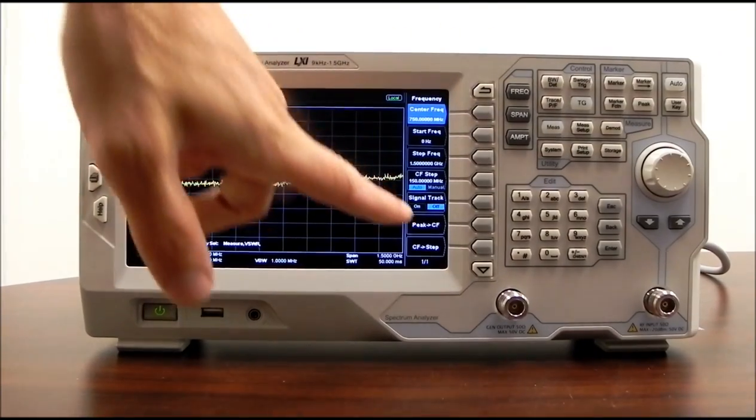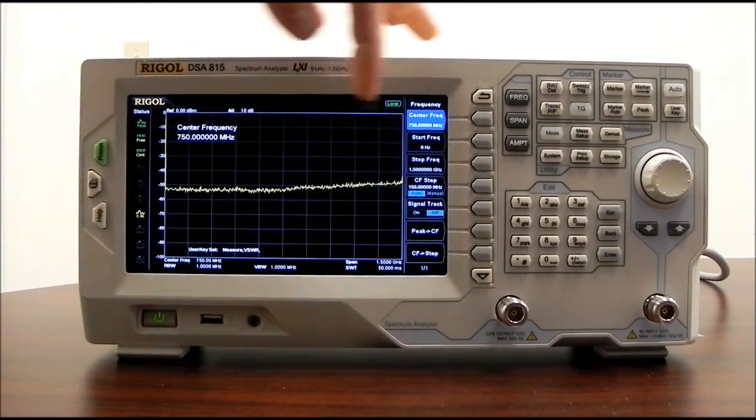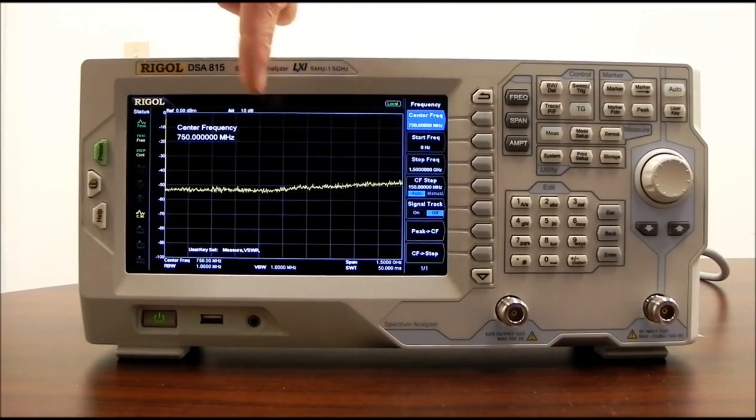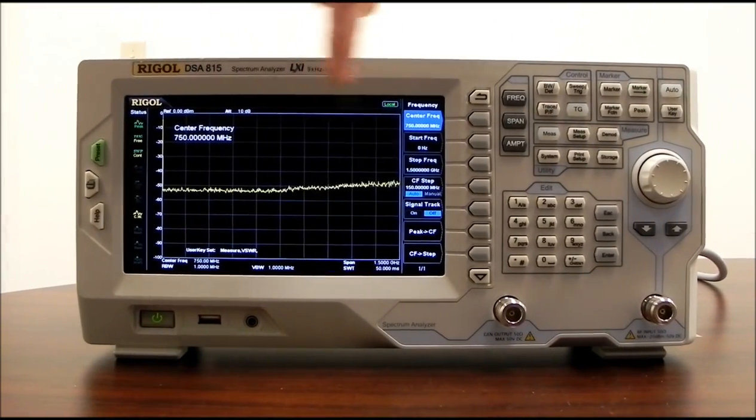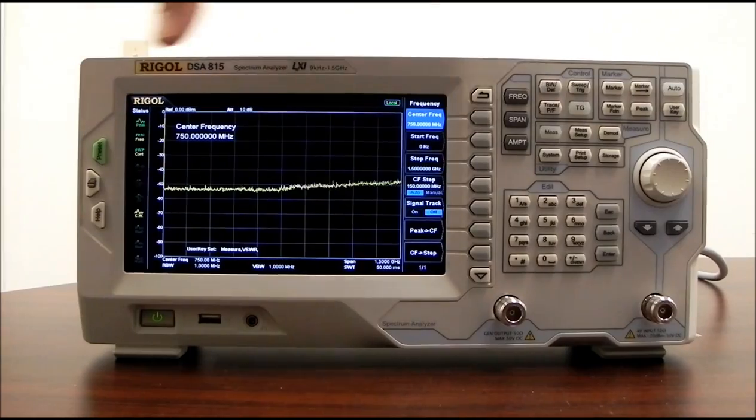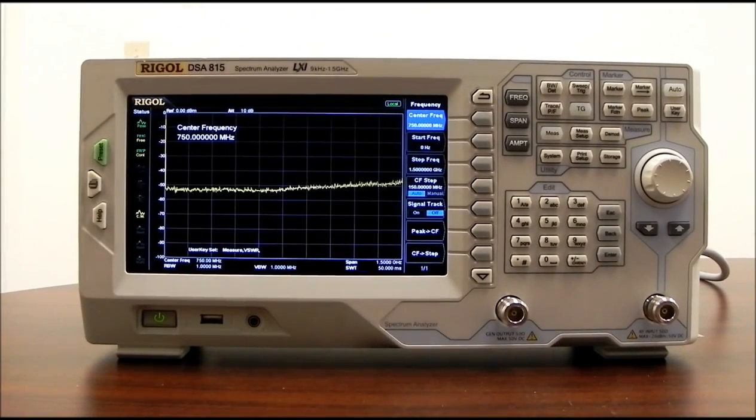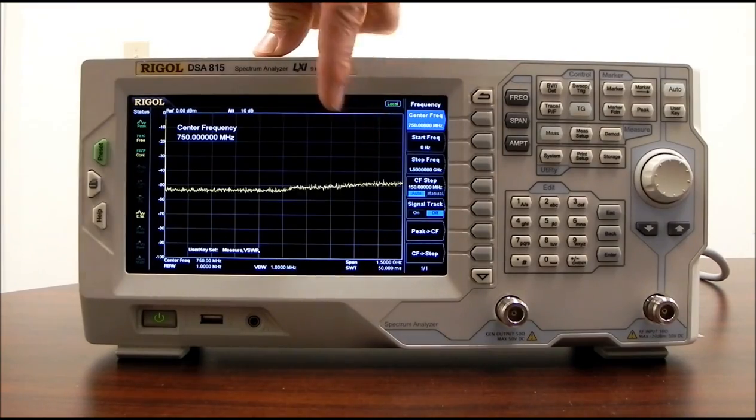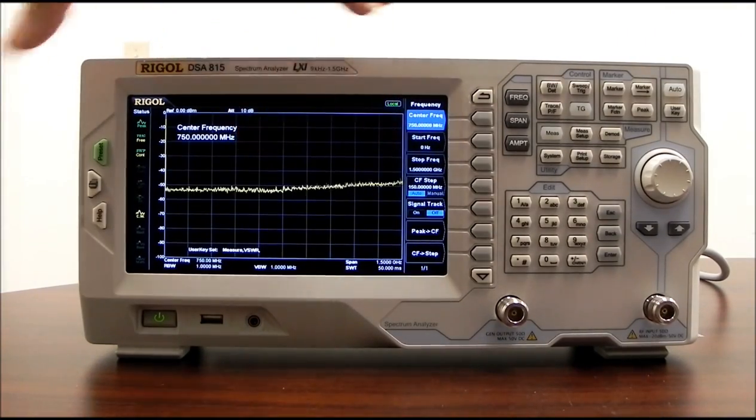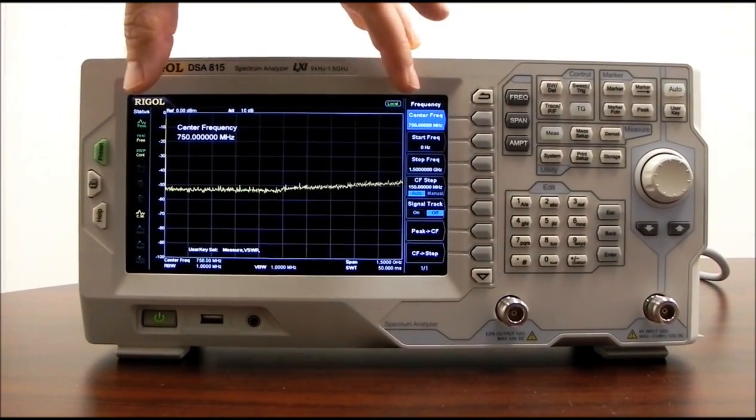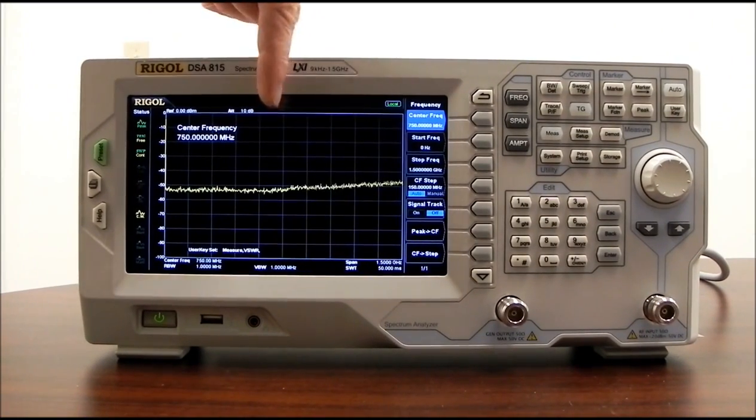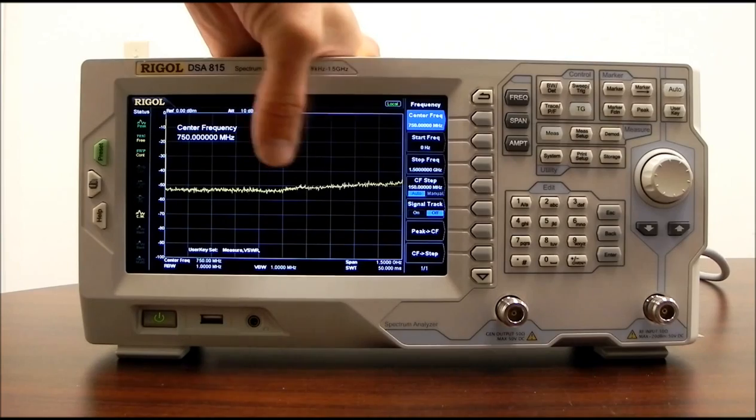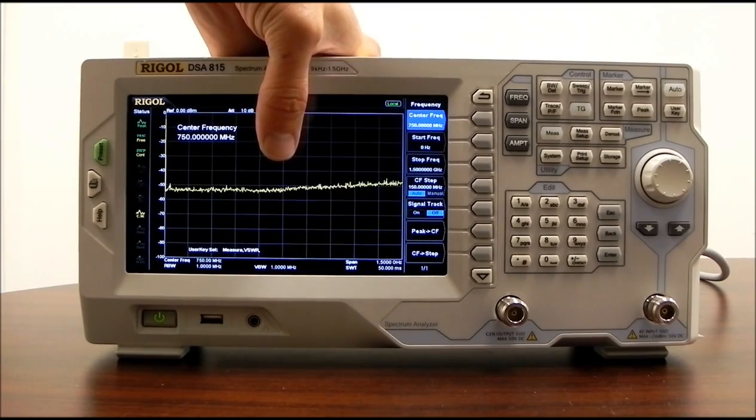Signal tracking. If we have a peak, it will actually allow that whole span to follow that peak as it's scanning along. So you can imagine if we have an FM signal and the FM signal is moving, signal track would follow that FM signal back and forth. Peak to center, if we have a peak and it's off axis, we can then press peak to center, and it will pull the entire display to show that peak in the center. So instead of being 750 MHz, as an example, if we had a one gig peak, it would pull the one gig peak to the center of the display.